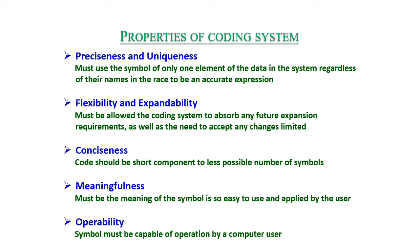Properties of a coding system: Preciseness and uniqueness — the system must use a symbol for only one element of the data, regardless of name, to be an accurate expression. Flexibility and expandability — the coding system must allow for any future expansion requirements as well as accept any changes.